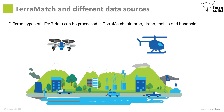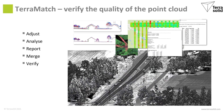You may have data from airborne, from mobile systems, from drones, or from handheld LiDAR systems. TerraMatch is a tool where you can verify the quality of the point cloud. You can make adjustments, analyze the geometric quality, create reports, and merge several datasets. You can verify the quality and be sure that the data is good when starting to create products from the point cloud.